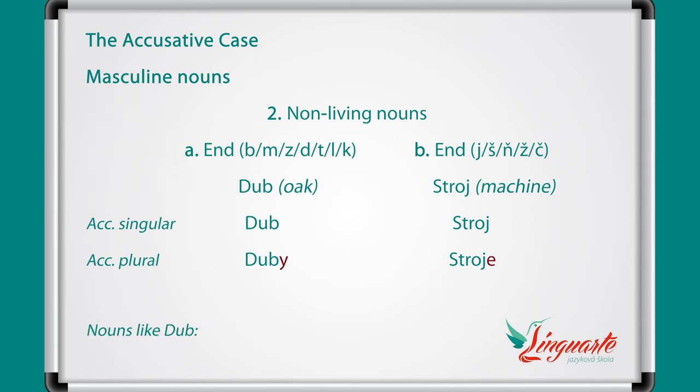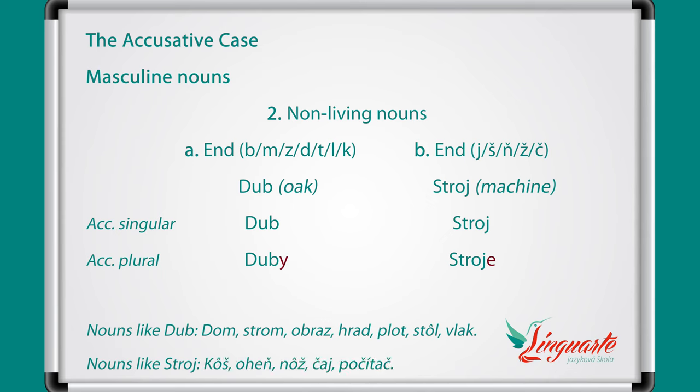Other nouns like dub are dom, strom, obraz, hrad, plot, stôl, vlak. Nouns like stroj are kôš, oheň, nôž, čaj, počítač.